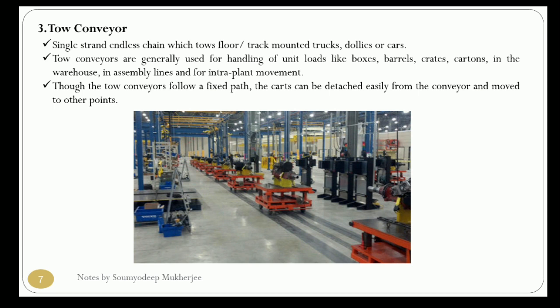The tow conveyor consists of a single strand endless chain which tows floor or track-mounted trucks, dollies, or cars on which materials are placed. There may be a question about how this is considered a conveyor since there is no belt system, but these dollies move on a chain-type haulage system. The tow conveyor follows a fixed path and the cars can be detached easily and moved to any other point.